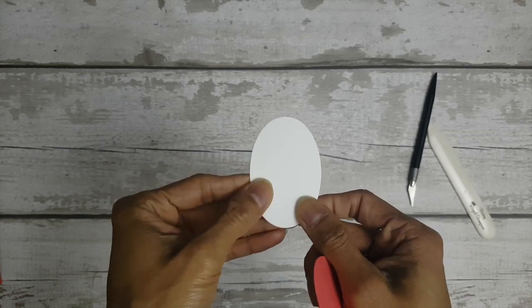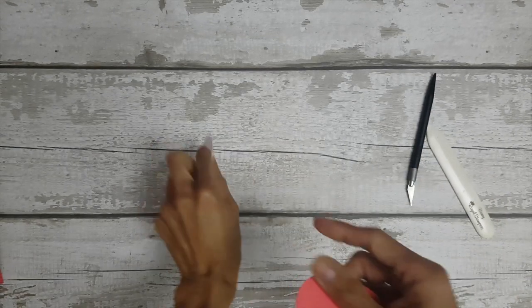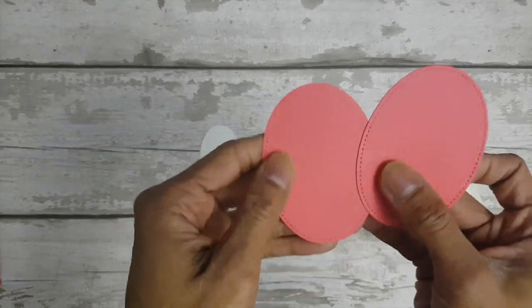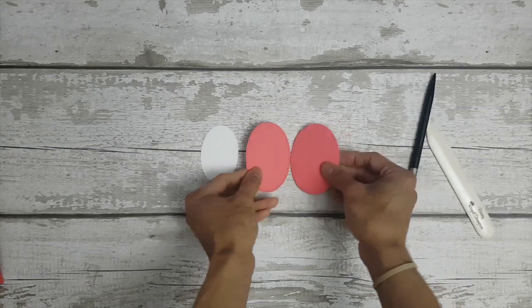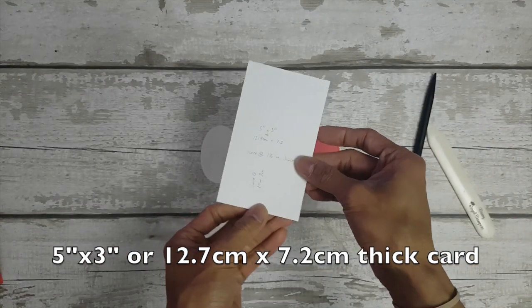So for the topper I've used the layering ovals, it's the fourth largest die in Whisper White and I've also cut two of the Stitched Shapes framelits oval, the largest one in Watermelon Wonder.